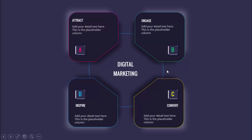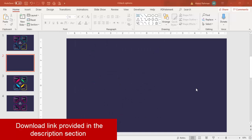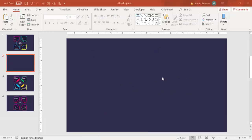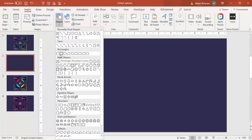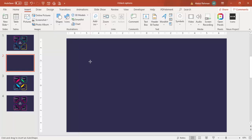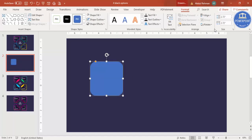Let's see how to do this in PowerPoint. Add a new slide and change the background to any dark color — in this case I've taken the indigo color. Then go to Insert > Shapes and select the rectangle with rounded corners. Hold the Shift key and draw the rectangle, setting the height and width to maybe 2.65.